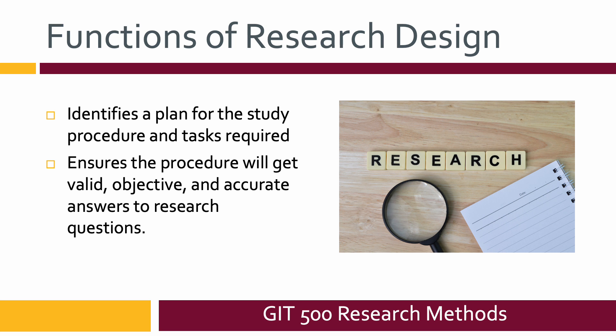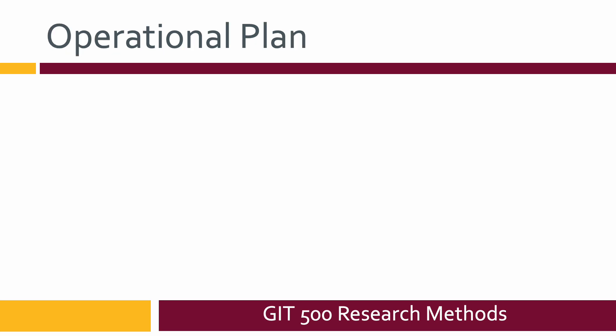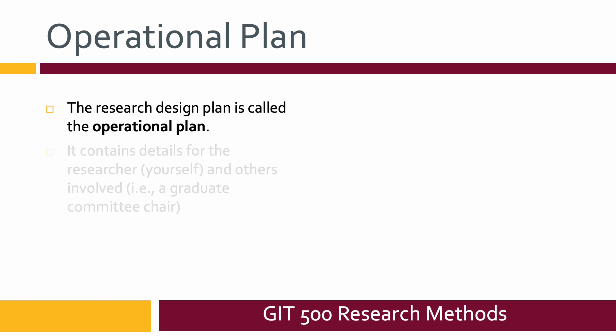An operational plan is basically the plan within research design. It contains details for the researcher, yourself if you're the researcher, and anybody else involved. So like in graduate school, if you do an applied project or a thesis at the end of your program, you'll have a graduate committee chair and that person will need to see your operational plan.